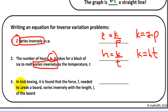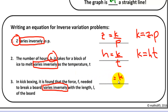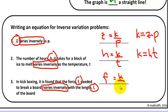Third example: in kickboxing, it is found that the force needed to break a board varies inversely with the length of the board. 'Varies inversely' equals K divided by something. The variable before is force, so write F before the equal sign. The variable after is length, or L, which will be your denominator. So your constant of variation will be K equals F times L.